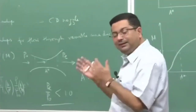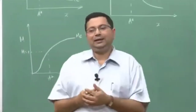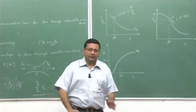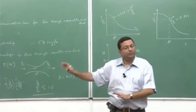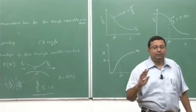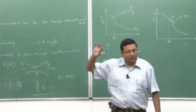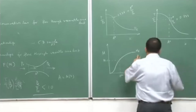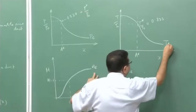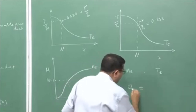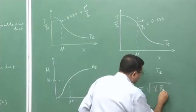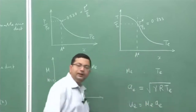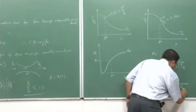Now let us look at the same problem again. When the rocket is flying, when it is on the ground it experiences sea-level pressure. As it flies, the exit pressure or ambient pressure keeps on dropping. The rocket experiences different pressure at different altitudes. The exit velocity will be M_e times a_e, equal to M_e times √(γRT_e). So the exit velocity is essentially a function of exit conditions.